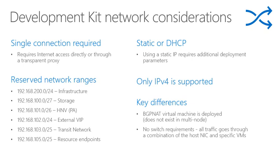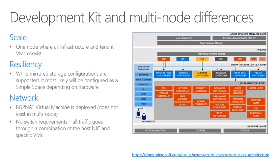Moving to multi-node differences around scalability, resiliency, and networking: in a single-node deployment, all infrastructure and tenant VMs exist together, and resiliency is handled via mirrored storage configuration. The same networking and BGP considerations discussed earlier apply. This is a common architecture — links to the Azure Stack architecture slides and diagrams are available if you want more detail.